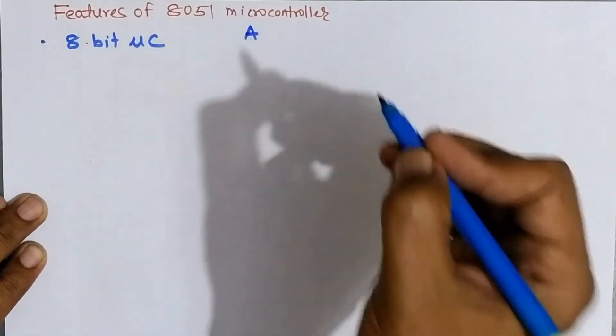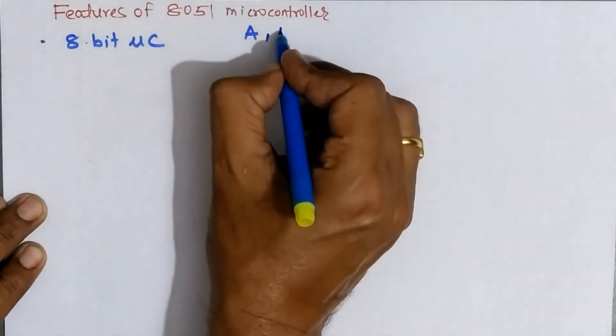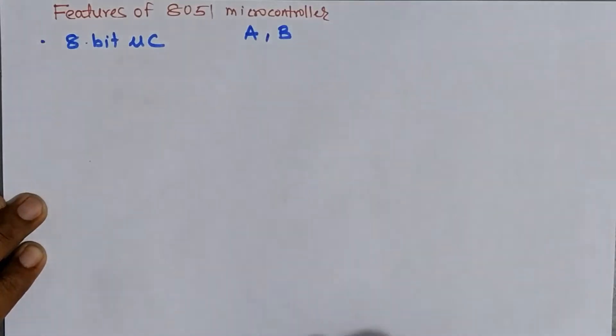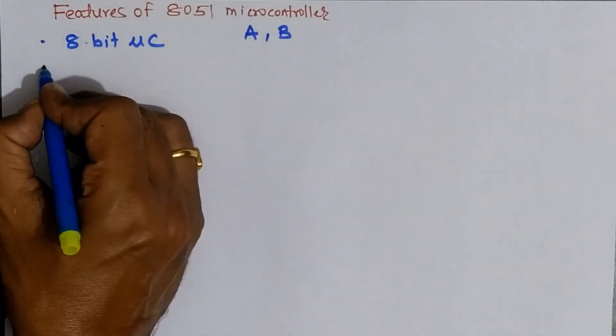Similarly, it has different registers, say register A, which is also called as accumulator, register B, they are also of 8-bit. The various registers which belong to register bank, like R0 to R7 register, these are also 8-bit registers. And the data bus of 8051 is also 8-bit.